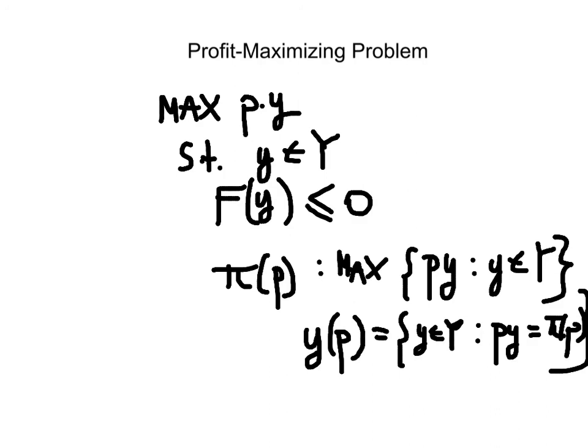So supply correspondence is really Y-star, the optimal bundle. The profit function is PY-star, the value function.